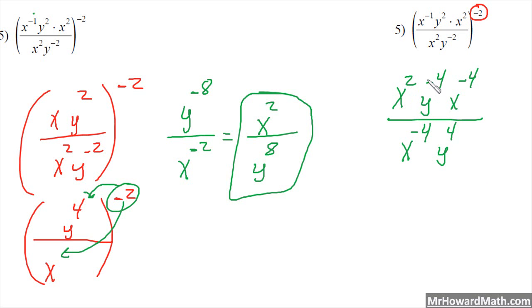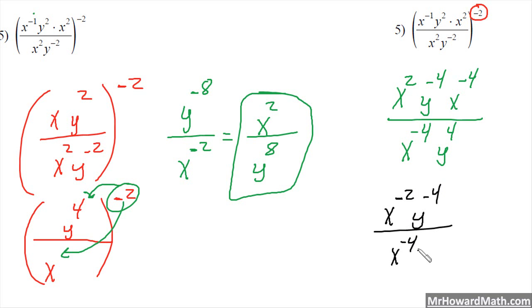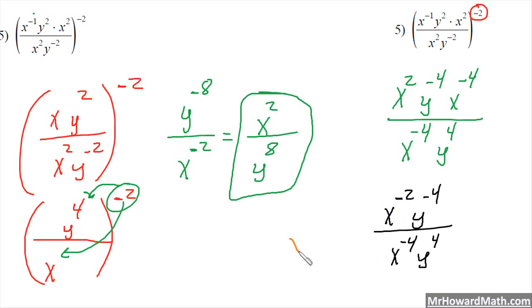Now we can start combining. In the numerator, I have x squared and x to the negative 4 power. I add those exponents since I'm multiplying their bases, giving x to the negative 2 power — because 2 plus negative 4 is negative 2. The y to the negative 4 and the denominator are not changing in this step. Now comparing numerator and denominator for the x's: I have x to the negative 2 on top and x to the negative 4 on the bottom. Negative 2 is bigger by 2, so the numerator wins the x with x squared.